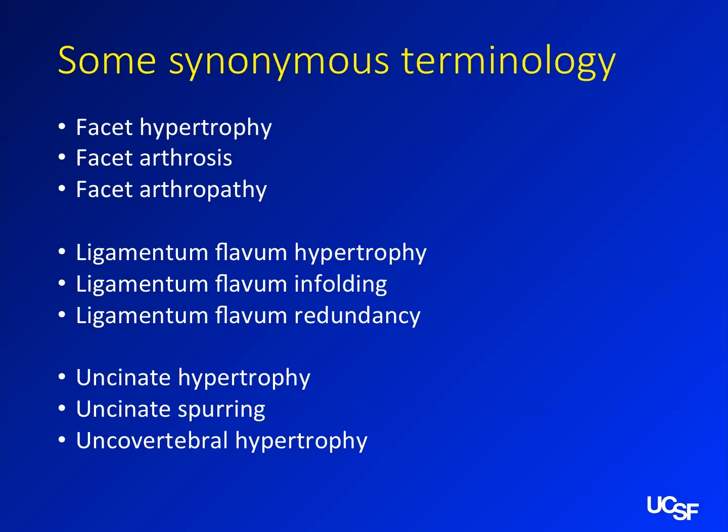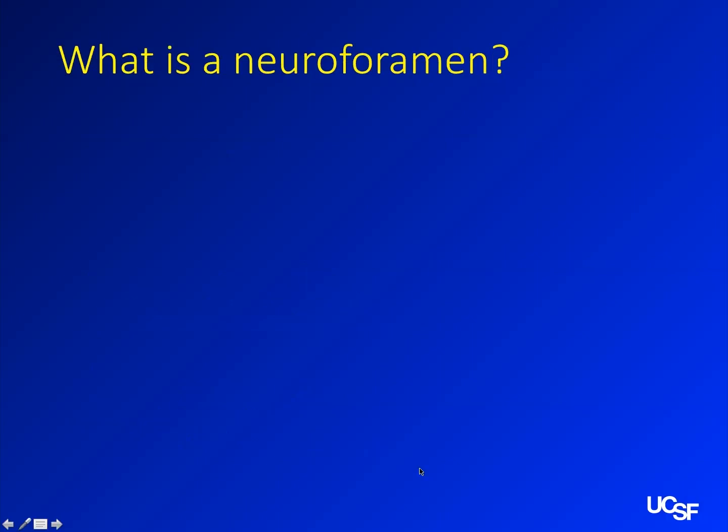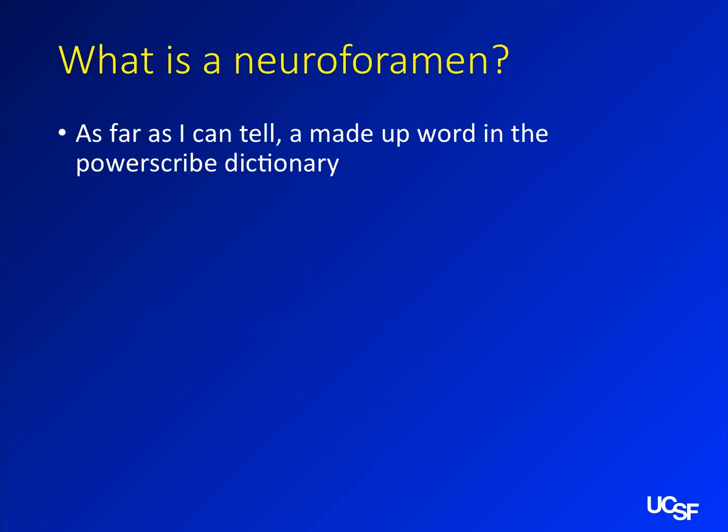Uncinate hypertrophy, uncinate spurring, uncovertebral hypertrophy — these all mean the same thing. They're all referring to growth of those uncinate processes that are causing some narrowing. As for 'neuroforamen' — as far as I can tell that's a made-up word from PowerScribe. If you want to be technically correct, it's 'neural foramen.' Neuroforamen makes it sound like there's a nerve with holes in it.